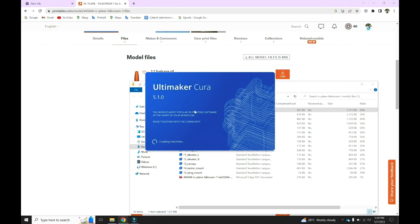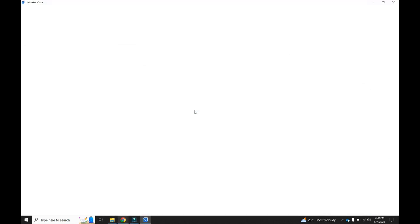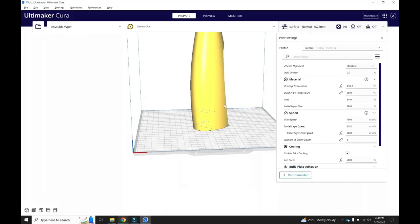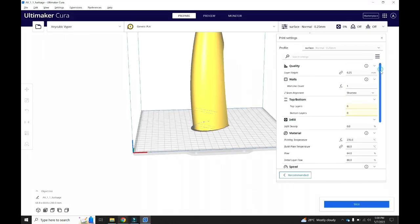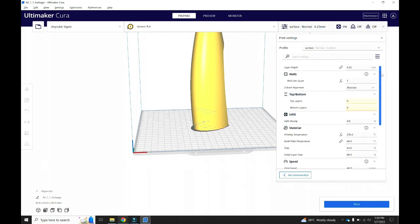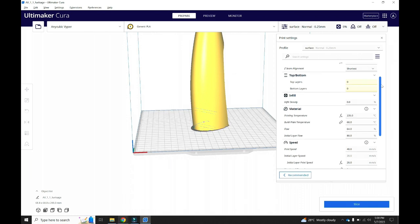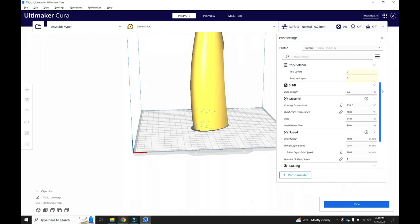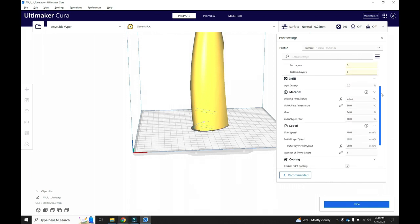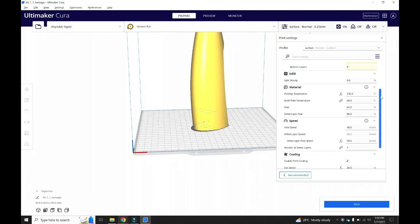Then we will open the files in Ultimaker Cura, which is the slicer that we are going to use. As we can see, I have already set up a custom printing profile. This allows me to slice each part with the same settings. I would suggest you follow the same settings as I did, as each individual parameter really affects the final quality.